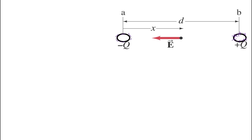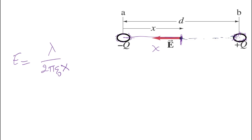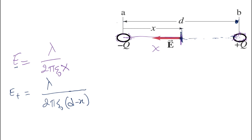The electric field produced by the negatively charged wire at a point X from it will be E₋ = λ / (2π ε₀ X). Similarly, the electric field from the positively charged wire is E₊ = λ / (2π ε₀ (D − X)), where D is the total distance between the wires and D − X is the distance from the point to the positive wire.